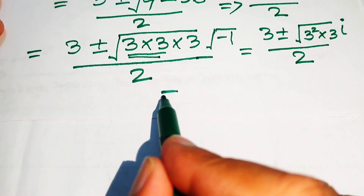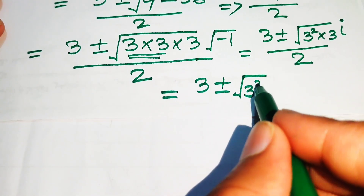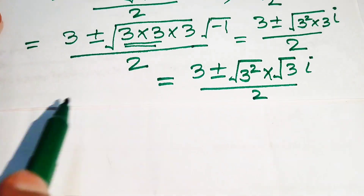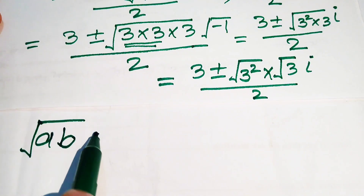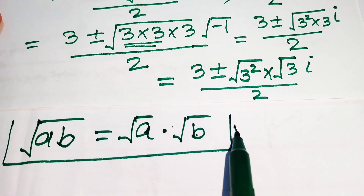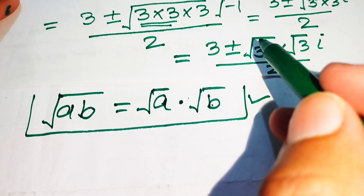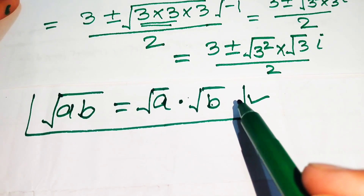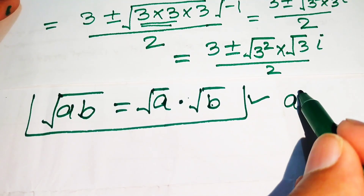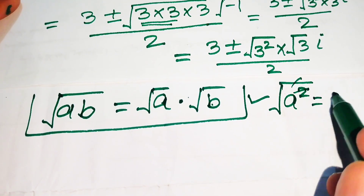Applying the square root property, we write it as (3 plus or minus square root of 3 squared times square root of 3 times i) divided by 2. We use the property that a square under a square root cancels out, so square root of 3 squared equals 3, simplifying the expression.